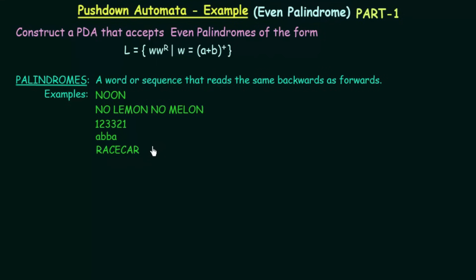We want to construct a pushdown automata that accepts even palindromes. From the examples shown: 'Noon' has 4 letters (even), the sentence has 14 letters (even), the number has 6 digits (even), and A-B-B-A has 4 letters (even). 'Race Car' has 7 letters — it is an odd palindrome, so it would not be accepted. Our palindrome is also limited to only the symbols A and B.